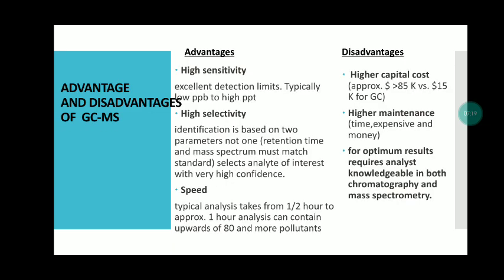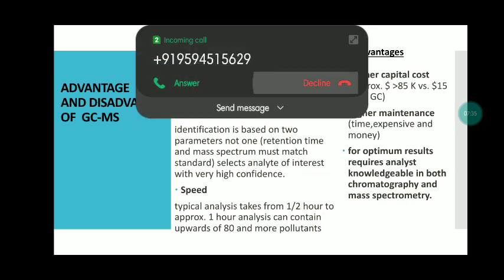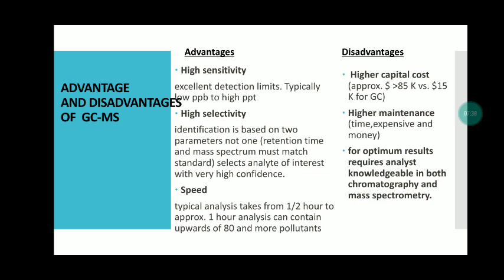Advantages and disadvantages of GCMS. Advantages: high sensitivity with excellent detection limits, typically from low ppb to high ppb; high selectivity, as identification is based on two parameters — retention time and mass spectrum — which must match a standard, allowing selection of analytes of interest with very high confidence; speed, with typical analysis taking from half an hour to approximately one hour. Disadvantages: higher capital cost, higher maintenance, and for optimum results, requires analysts knowledgeable in both chromatography and mass spectrometry.